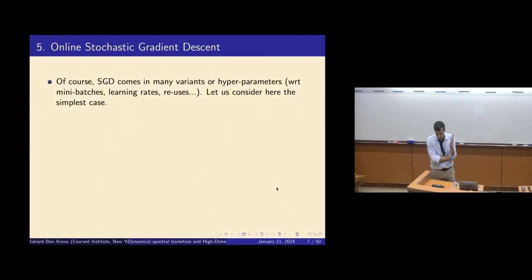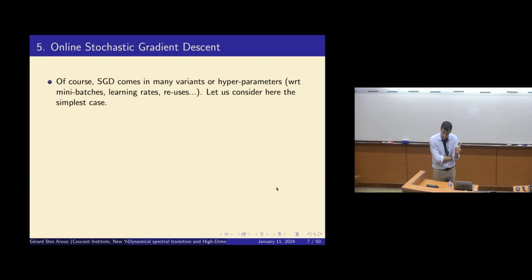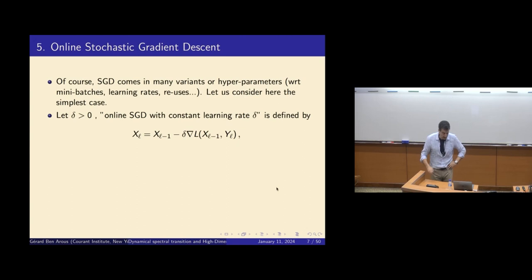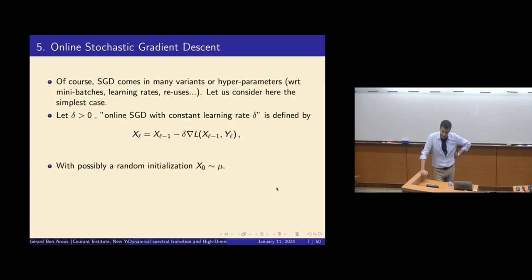One way to do that is to do SGD, which comes in many variants. Here I will consider the simplest case, as far as possible from the Langevin case. I'm taking the smallest batch size possible — that is, one. I call that online SGD with, for the moment, a constant learning rate delta. X_{l+1} is X_l minus delta times the gradient evaluated at sample Y_l. If you have a sample of size M and don't do reuses, the maximal number of steps is M. The initialization is random under distribution mu.